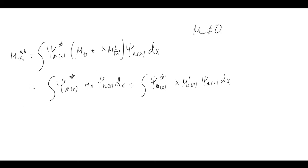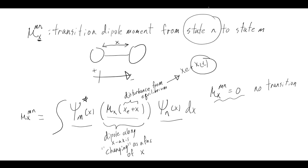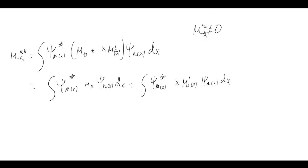We want to know when this transition dipole moment is not equal to zero. In basically all cases we care about, at most temperatures we start in the ground state. So state n is n=0 - the ground state. This is a good assumption because at room temperature we don't naturally populate excited vibrational states.